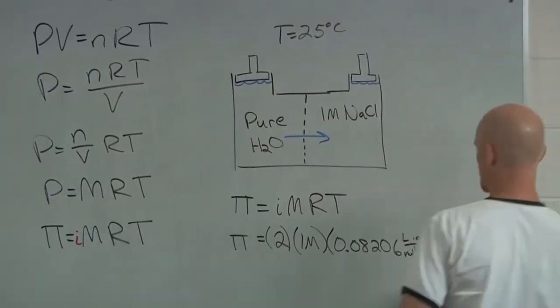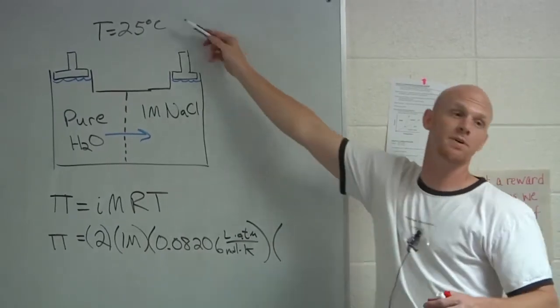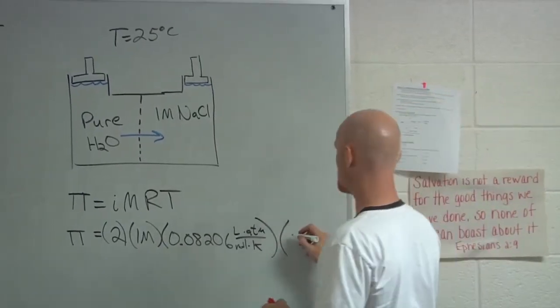So what do I need to plug in for T here? 273 plus 25. Good. 273 plus 25. Got to be in Kelvin. So in this case, 298 Kelvin.